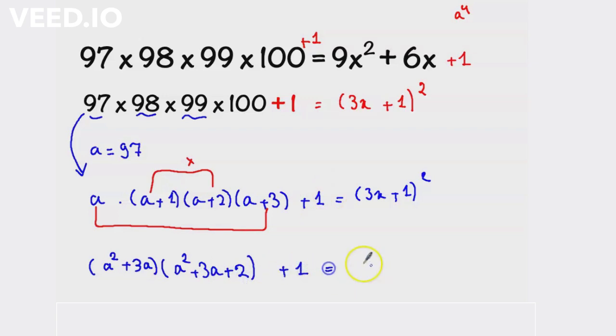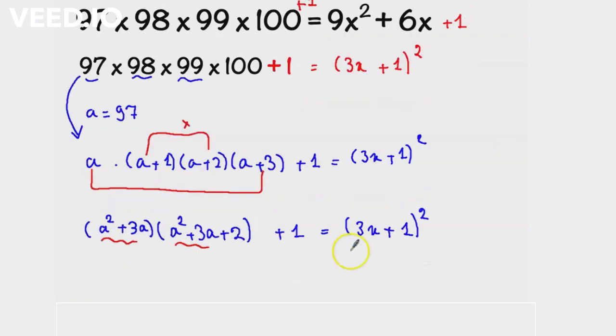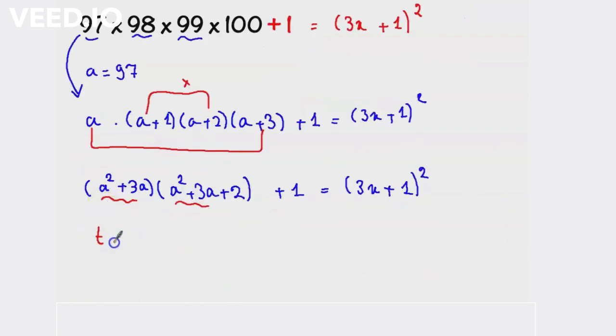Now if you notice we have a² but 3a is a common, so we will take another substitution t. t equal to a² plus 3a. So now the left hand side becomes t multiplied by (t + 2) plus 1 equal to (3x + 1)².